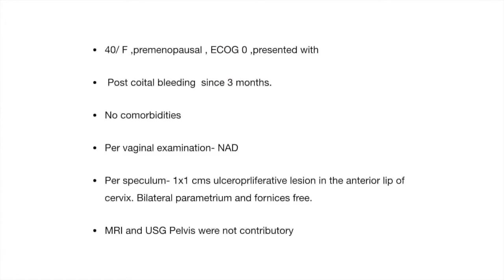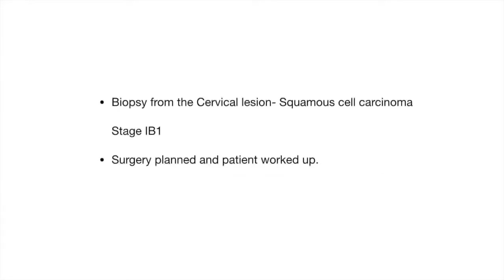There were no significant comorbidities. On per-vaginal examination, there was nothing significant. Per-speculum revealed a 1 by 1 cm ulceroproliferative lesion in the anterior lip of cervix. Bilateral parametrium and fornices were free. MRI and ultrasound were not contributory. Biopsy from the cervical lesion revealed it to be a squamous cell carcinoma stage 1b1. Hence, surgery was planned and patient worked up.